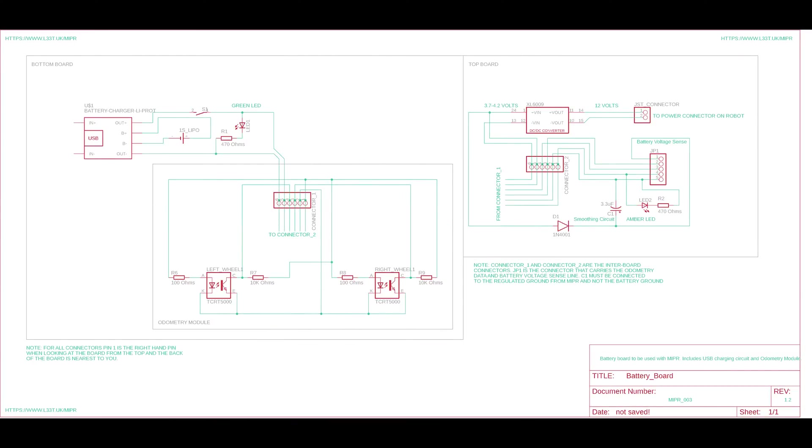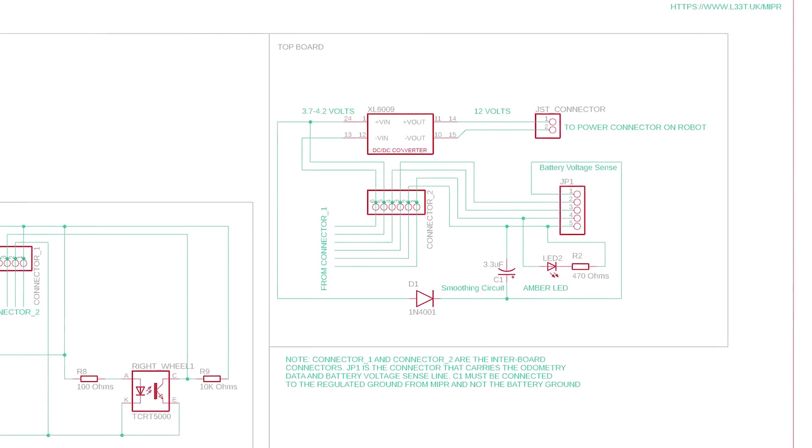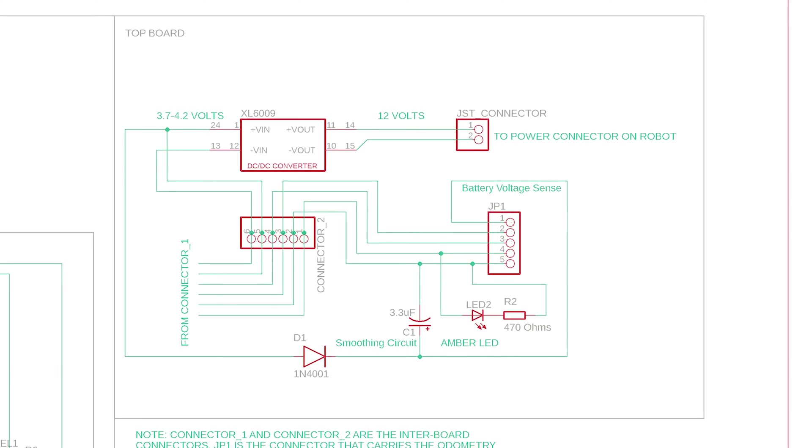Now we have finished the bottom board, let's build the top board. This is what we are going to build. As you can see we have the other side of the inter-board connector. This is connected to the DC to DC converter and to the 5 pin connector JP1. JP1 will carry 5 volts and ground to the odometry module. It will also carry data from the odometry module and battery sense line to the Arduino. The DC to DC converter will convert our battery voltage to 12 volts. This will be passed to the robot via the JST connector. The robot will use 12 volts to power its motors and the linear regulator will convert this 12 volts to 5 volts for the Arduino and the sensor boards to use.